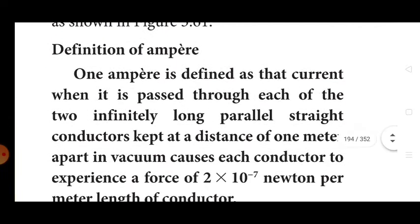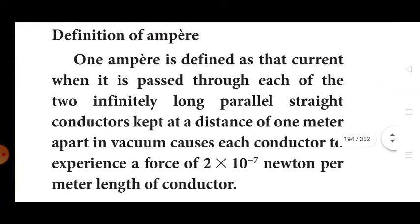Define ampere. One ampere is defined as that current which, when passed through each of two infinitely long parallel straight conductors kept at a distance of one meter apart in vacuum, causes each conductor to experience a force of 2 × 10⁻⁷ newton per meter length of the conductor.